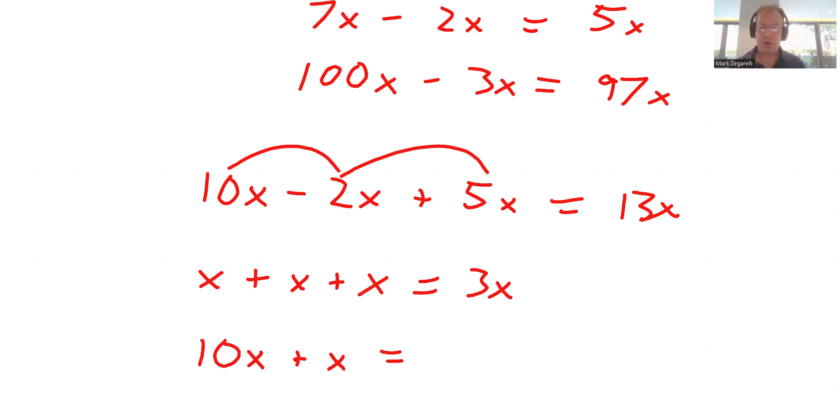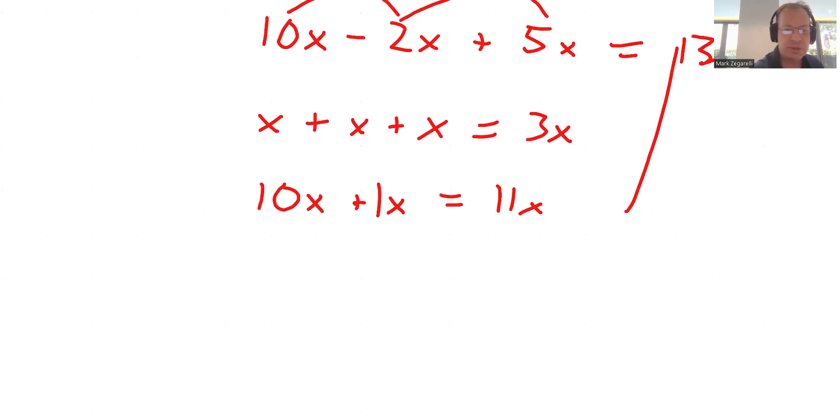Don't get confused and say, well, I only see a 10, I don't see another number, so it must equal 10. When you see just x, that's really a 1x, and 10x plus 1x equals 11x. Same with subtraction: 15x minus x minus x - that's 15 minus 1 minus 1 - takes us down to 13x.